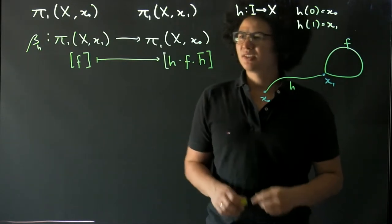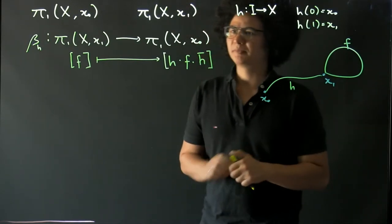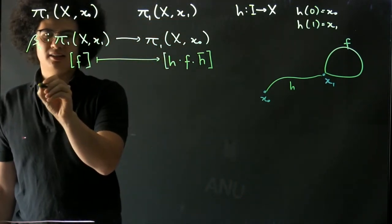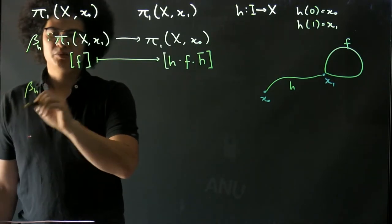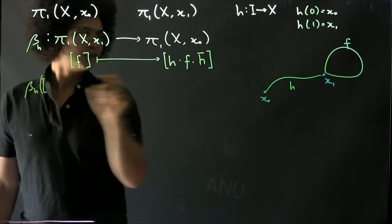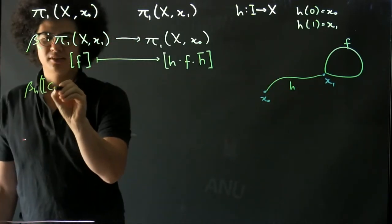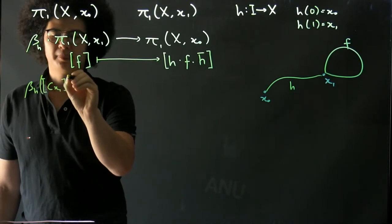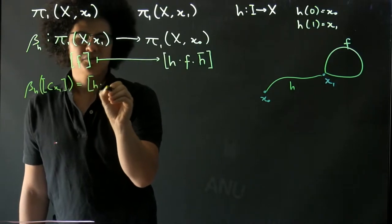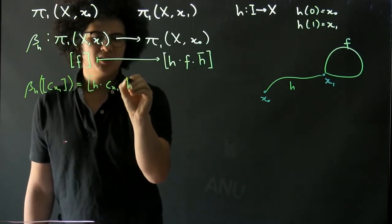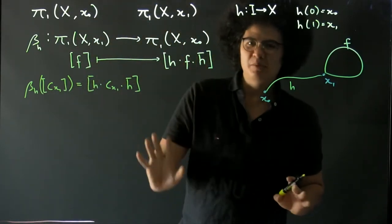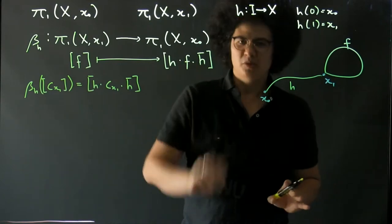I claim that this is a group homomorphism. What do we need to see? We see that β_h of the constant path at x₁ is h composed with the constant path at x₁ composed with h bar.